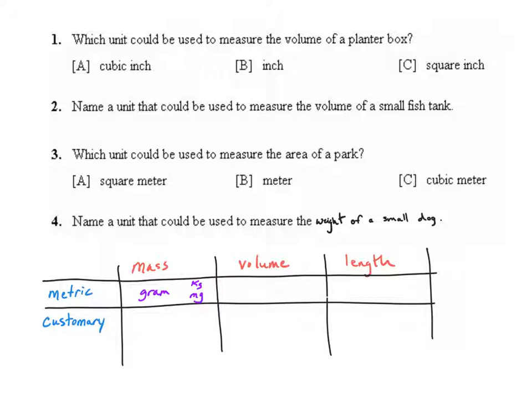In the customary system we don't have a basic unit, but the most common units you're going to use are pounds, ounces, and tons.